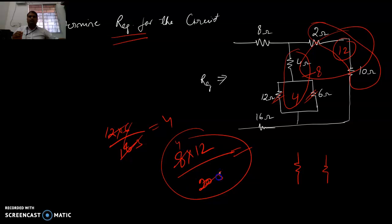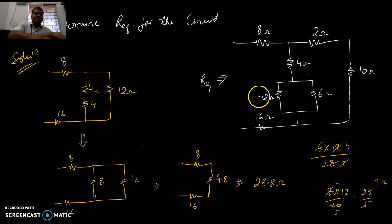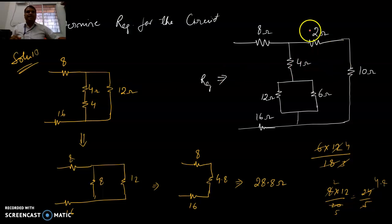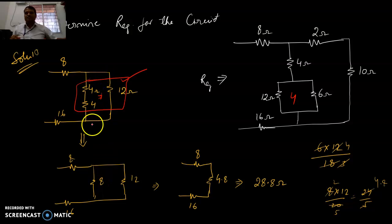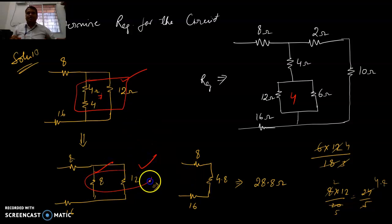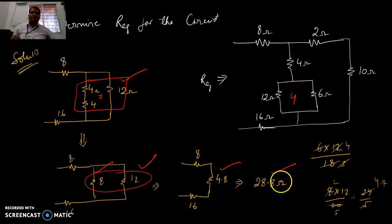Some values are not cleanly divisible, but we can solve. Here 10 and 2 give 12, and we have 4 and 4 giving 8. These two are in series, then in parallel. Solving: 12 and 8 in parallel, then add three terms in series, giving a final R equivalent of 28.8 ohms.